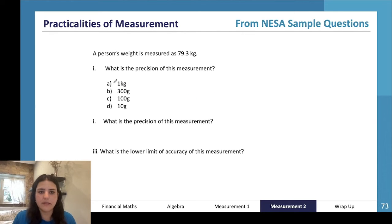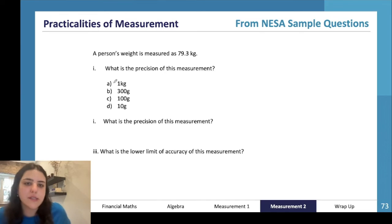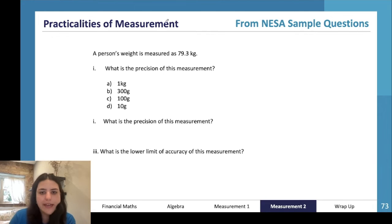You see that here - 9.45 centimeters. Okay, this is from the NESA sample questions. A person's weight is measured as 79.3 kilograms. What is the precision of this measurement? Okay, so again we're measuring to 0.1 kilograms, which actually means we're measuring to 100 grams.